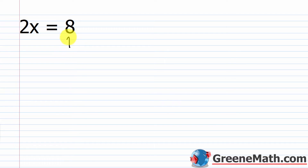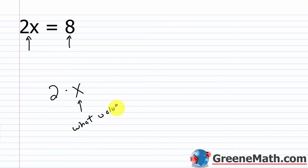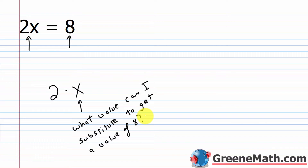Looking at 2x equals 8: if I look at the right side, the value is 8. On the left side, I have 2 times x. So what you have to ask yourself is: what value can I substitute to get a value of 8? For the equation to be true, the left and the right side need to be equal — the right side is 8, so 2 times some number must equal 8. Can you think of a number that when you multiply by 2 you get 8?